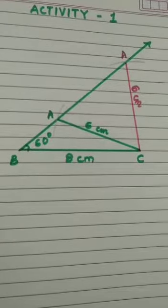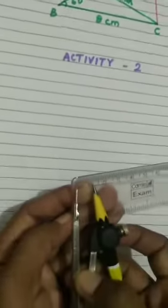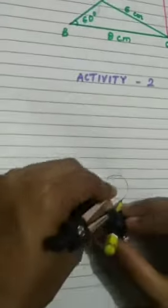One more activity we will do now children. Activity 2. This is related to circles. Take 1 cm distance, draw a circle. See that you draw a circle at the center of your page. Draw a circle of radius 1 cm.